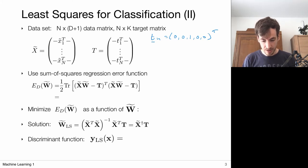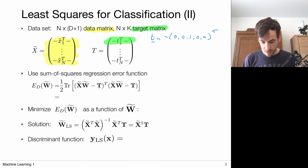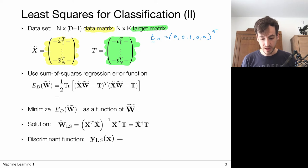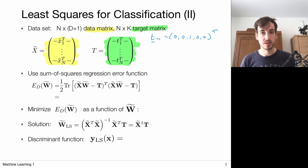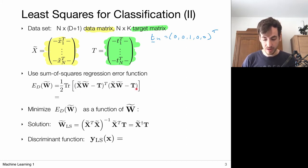We build one big data matrix by stacking all data vectors on top of each other, and a target matrix encoding all the predictions we want to make. This target matrix is N by K — for each of N data points, I have K classes with K zeros and ones to predict. We then define a least squares regression error function minimizing the squared error for each component.